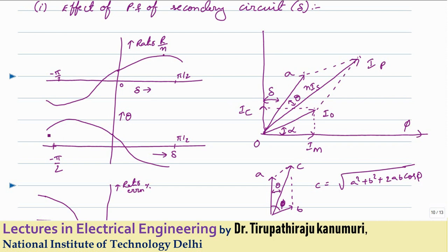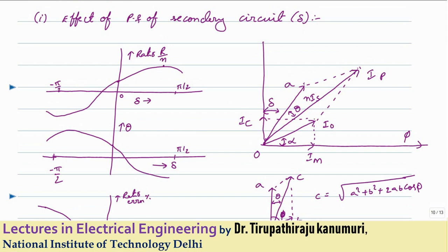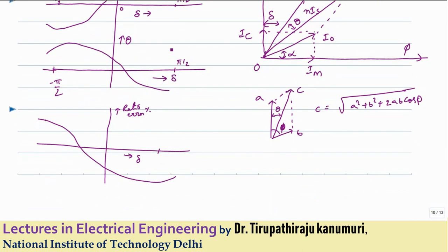We can conclude: as the secondary load power factor is lagging and the power factor increases, the ratio error magnitude increases, whereas the phase angle error decreases, reaching zero and then going negative. Conversely, as delta decreases (leading power factor), the phase angle error increases while ratio error decreases, eventually reaching zero. This is the combined effect of secondary power factor on both ratio error and phase angle error.